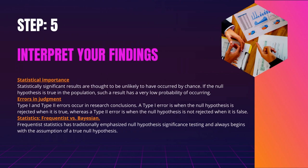Step 5: Interpret Your Findings. The final step in statistical analysis is to interpret your findings. Statistical significance is the primary criterion for drawing conclusions in hypothesis testing. To determine whether your results are statistically significant or not, you compare your p-value to a predetermined significance level, usually 0.05. Statistically significant results are thought to be unlikely to have occurred by chance. If the null hypothesis is true in the population, such a result has a very low probability of occurring.